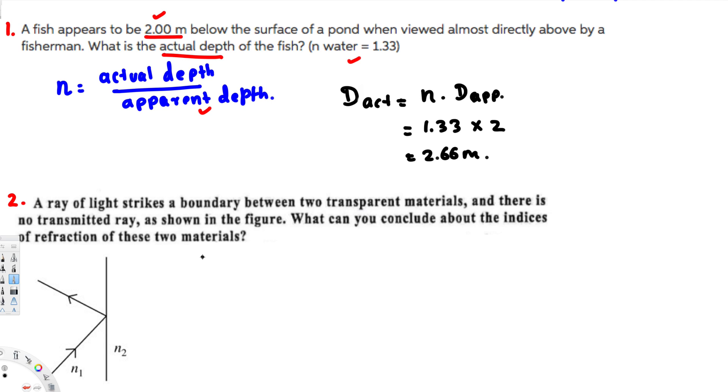So whenever you have something like this, for total internal reflection to occur, what has to happen is that n1 has to be greater than n2. Then only this will happen, right?